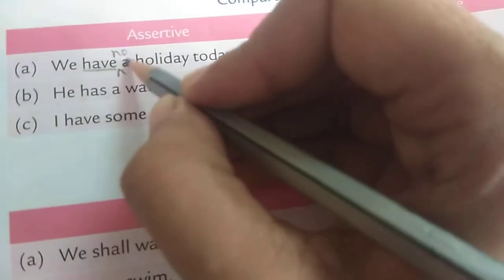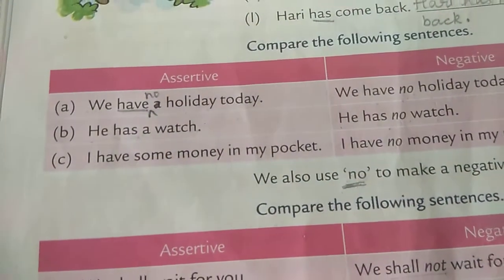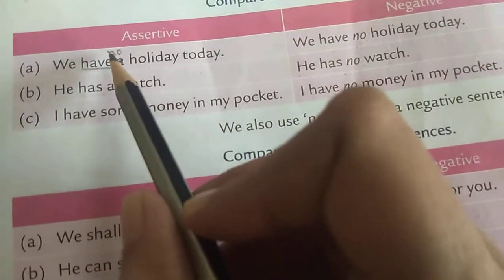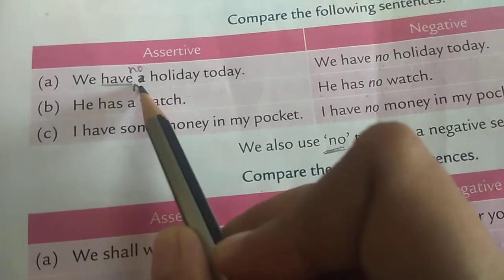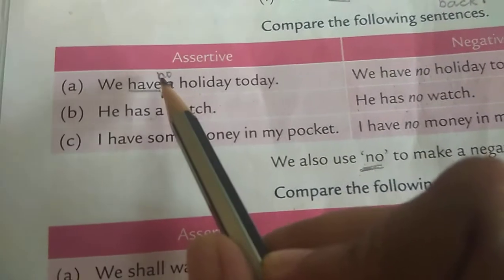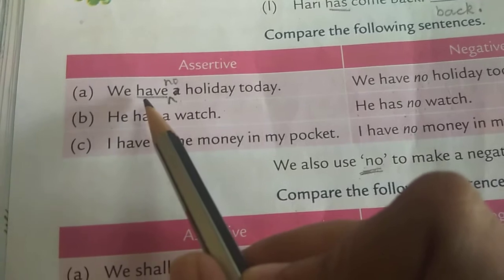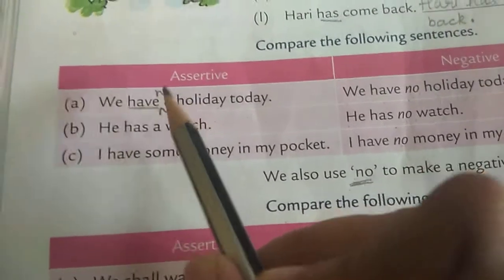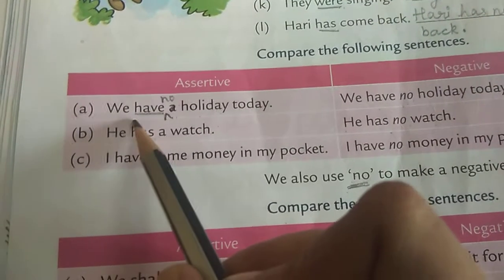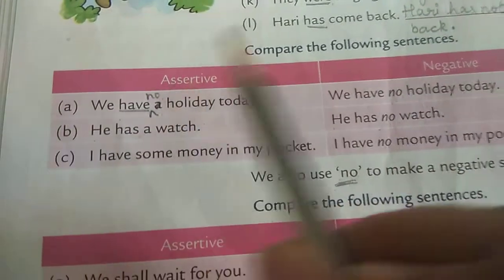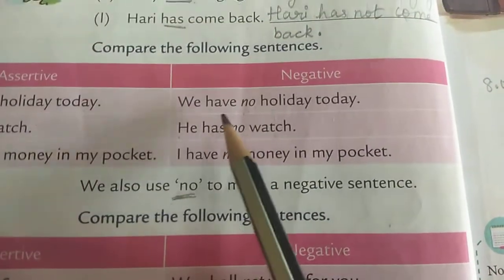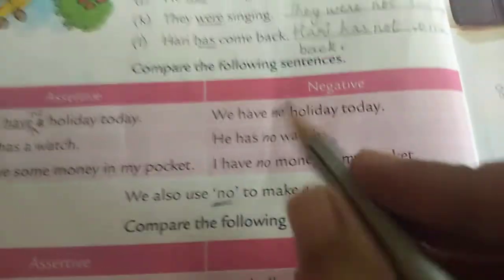When we are adding 'no' in the sentence, the article 'a' must be removed. When we add 'no', we have to remove the article — whether it is 'a' or 'an'. We remove the article and then write 'no' after the helping verb. After 'have' we add 'no' and change the sentence into negative: 'We have no holiday today.'